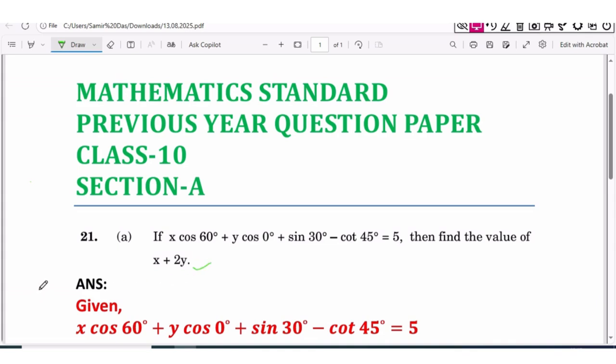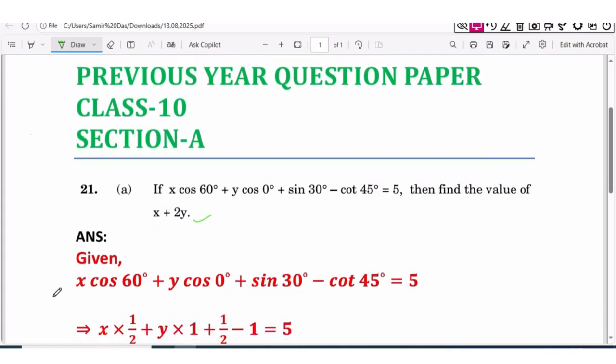Let's find the answer. Here given: x cos 60° + y cos 0° + sin 30° - cot 45° = 5. Now we will put the values of cos 60°, cos 0°, sin 30°, and cot 45°.